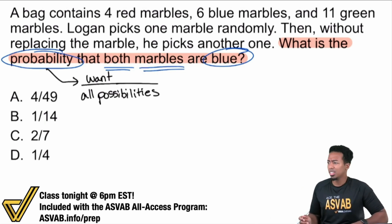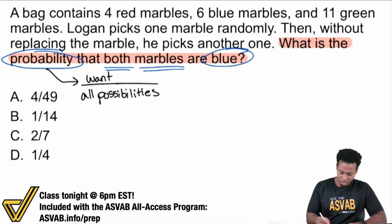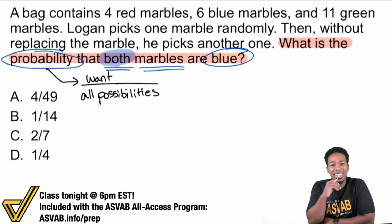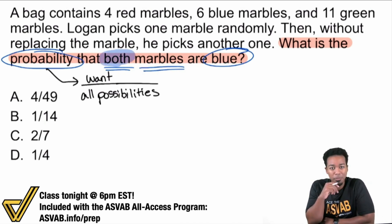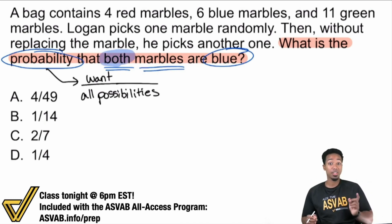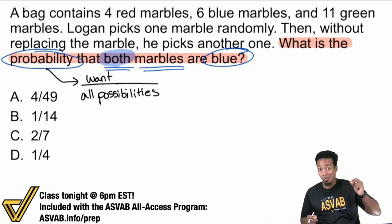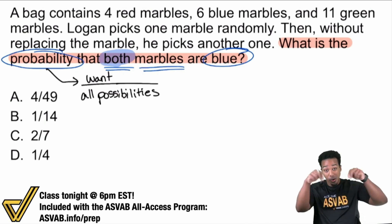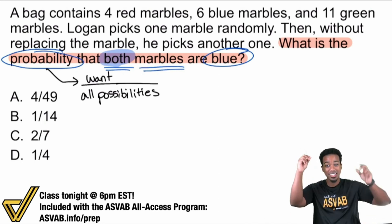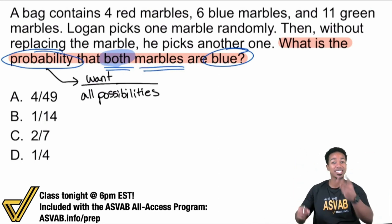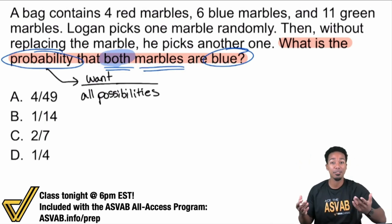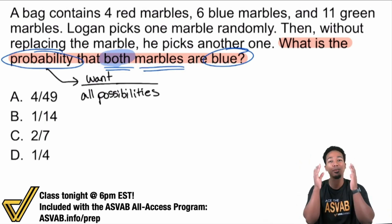But it doesn't say one probability — it says both. What does both mean? That means we're dealing with compound probability. We're dealing with more than one event. It's not saying probability of picking out one blue marble; it's saying both are blue. One selection, two selections — two or more events — compound probability.